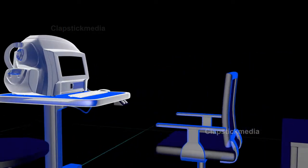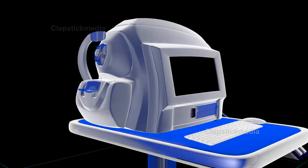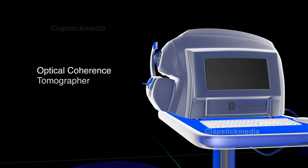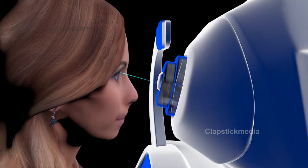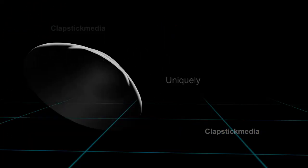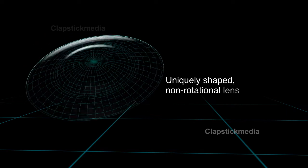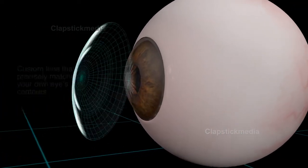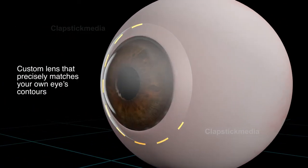Instead, we use a state-of-the-art specialized scanning device called an optical coherence tomographer to map the surface of the eye in minute detail. We then use this to design a uniquely shaped, non-rotational lens that precisely matches the natural contours of your own eye.